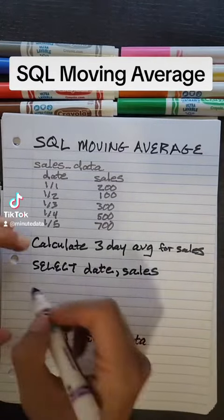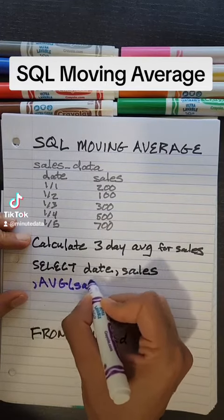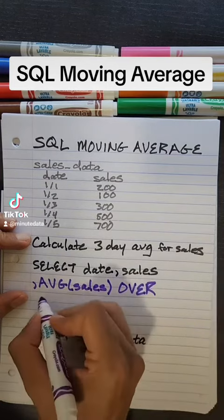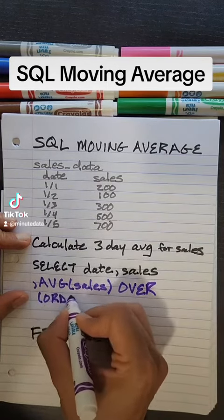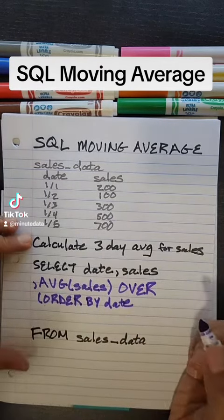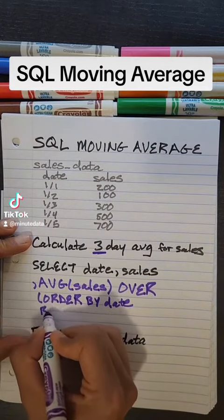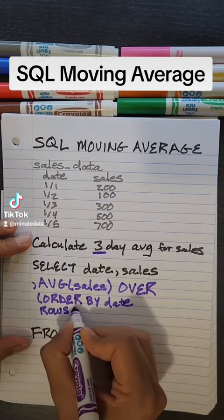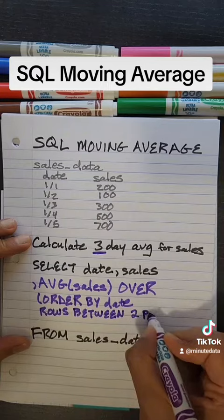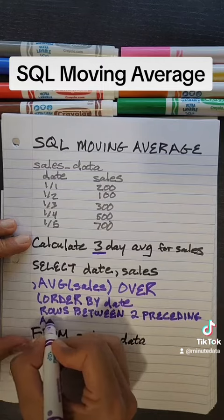Now let's calculate our moving average. We're going to use average of sales with a window option — so we do OVER, and make sure we sort by date. The key part for getting the three-day window is ROWS BETWEEN two preceding and current row.